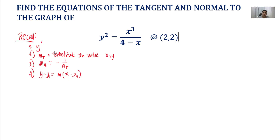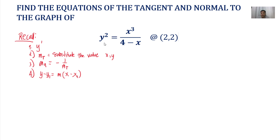And then lastly, we use the equation of a straight line, which is y minus y sub 1 equals the slope times x minus x sub 1. So that is what we follow to solve for the equation of the tangent and normal to the graph of this implicit function. So what we do is we derive both sides. So what is the derivative of y squared?